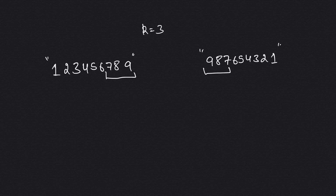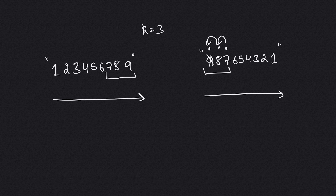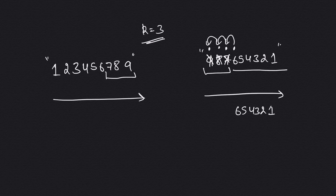We have to remove the number that makes the most impact. Moving from left to right, we compare the current number with the previous number. If the previous number is greater than the current number, we delete the previous number. Applying this: we start, then find 8 is greater than the next so we delete it, then 7 is greater so we remove it — after popping three elements we get the smallest possible number.